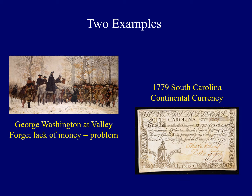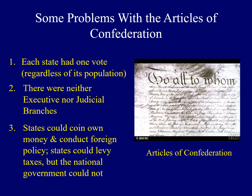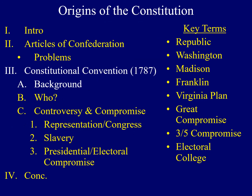Taken collectively, these range of problems with the Articles prompted some to want to try to modify those Articles or maybe even start from scratch. The meeting convened in order to modify the Articles of Confederation is called the Constitutional Convention. Delegates met in 1787.